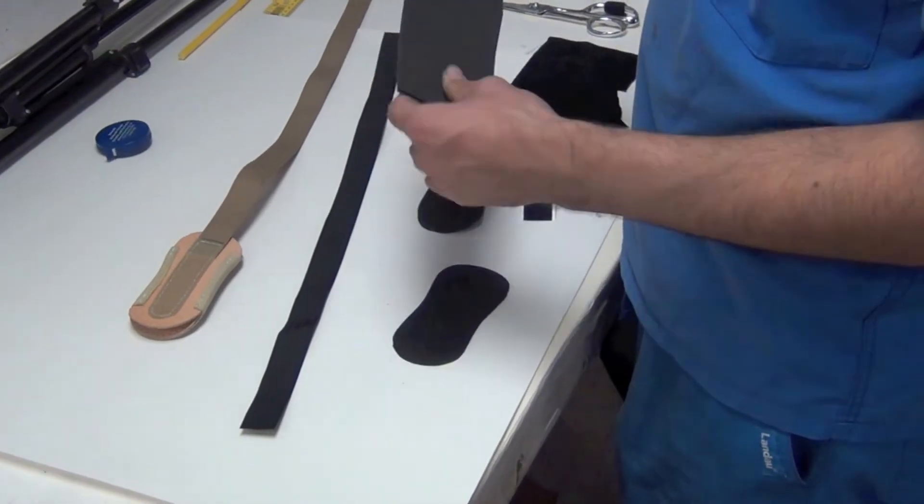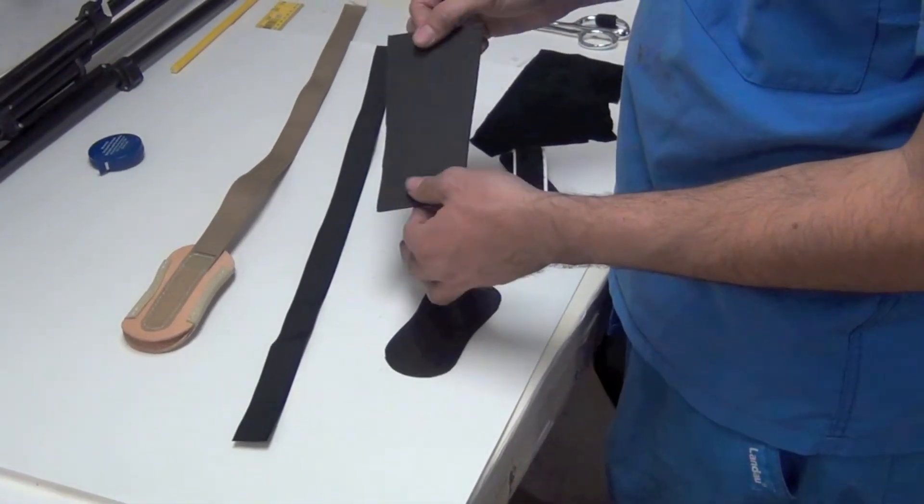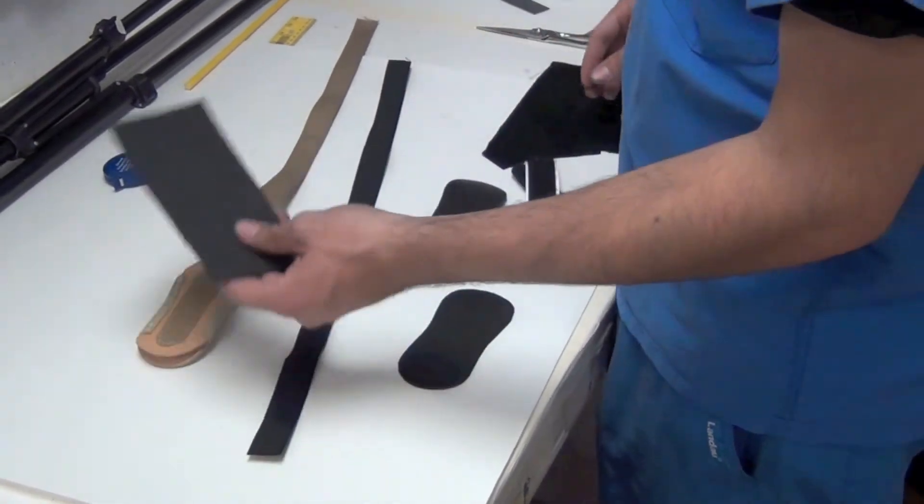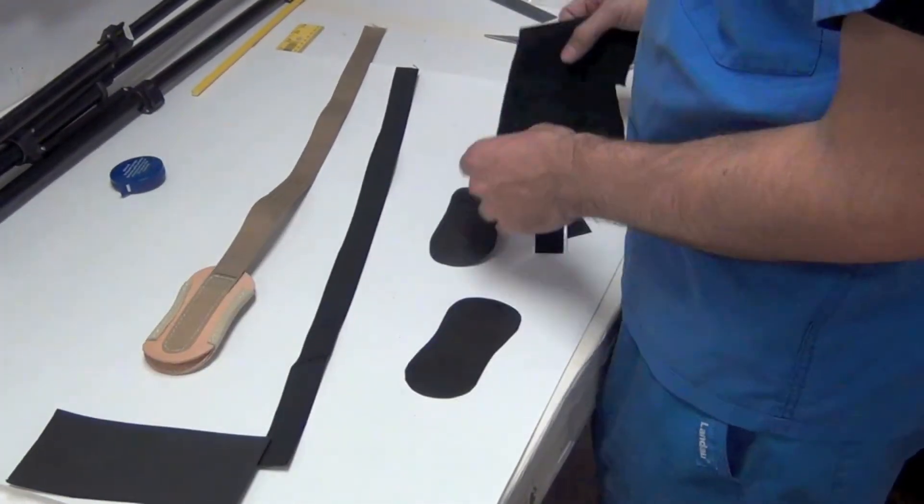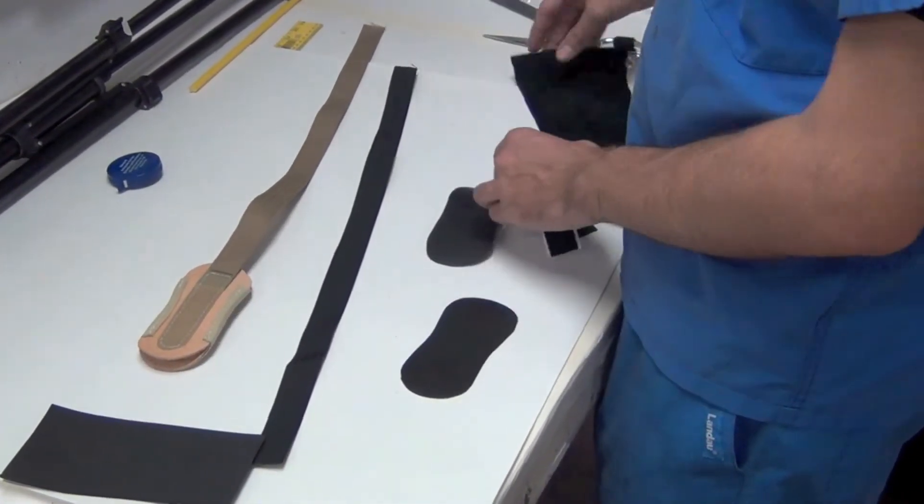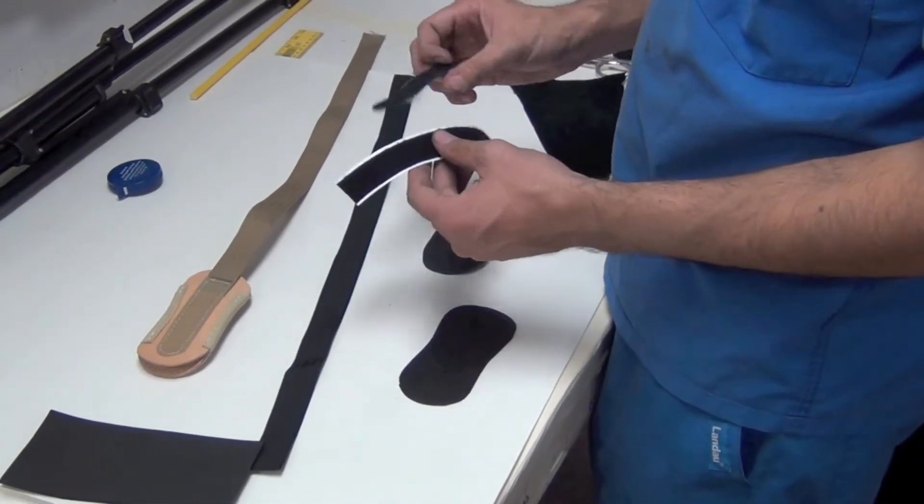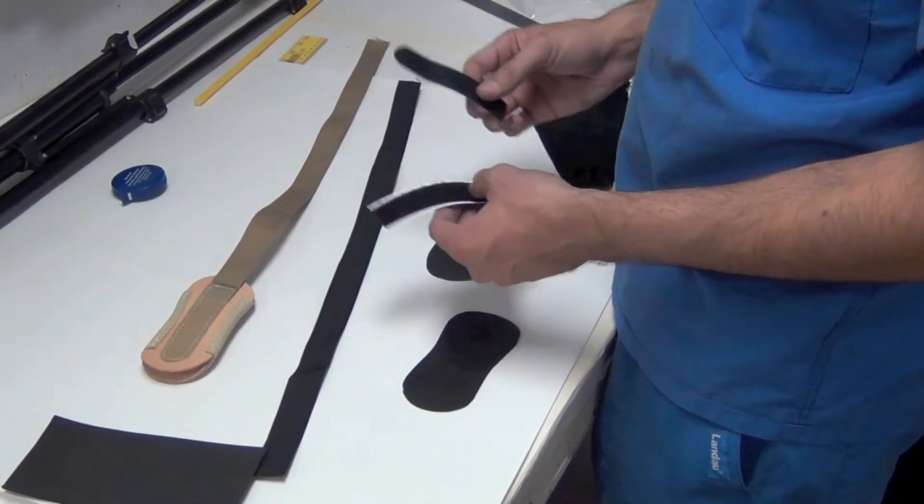I also have some 25 durometer EVA here, and that's 1 1⁄8 inch thick. I've got a piece of cowhide, some adhesive hook velcro, and loop velcro.